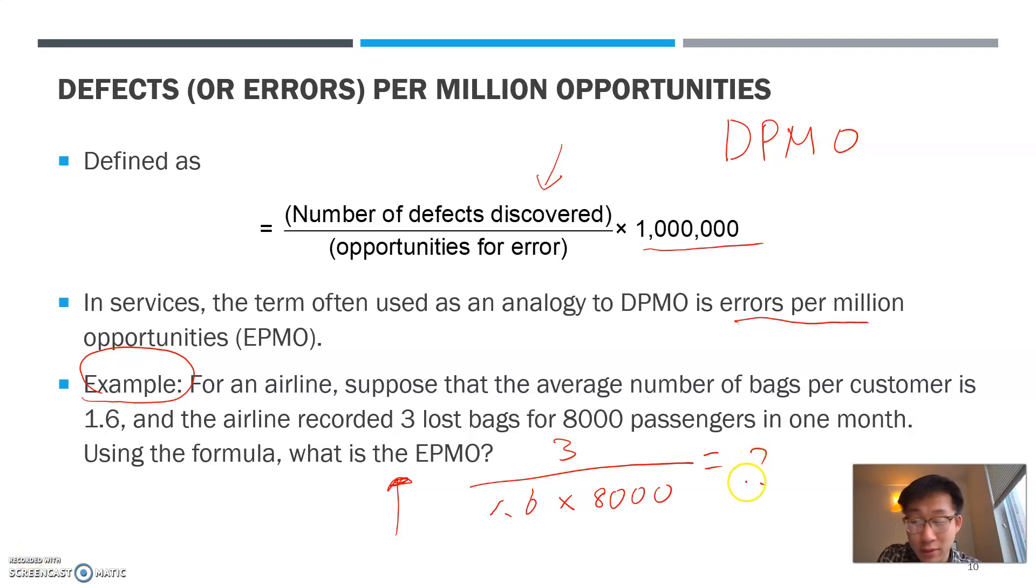So this gives you a very small number, like 0.0023 or something. So in order to get DPMO or EPMO, you need to multiply with 1 million. That will give you the number of mistakes they will be making in every 1 million opportunities.